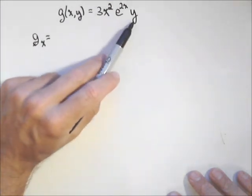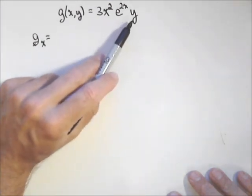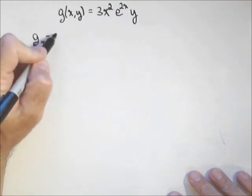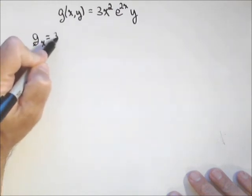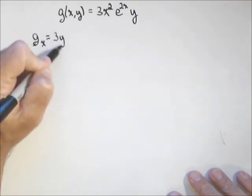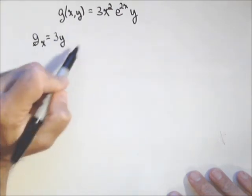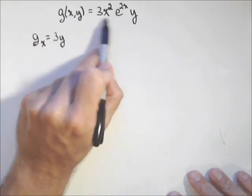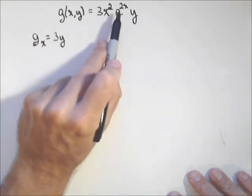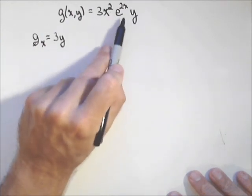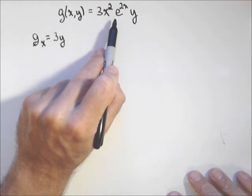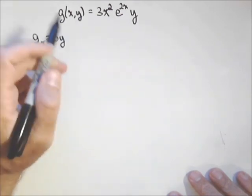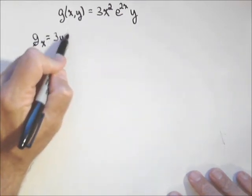So this becomes a constant — we treat it like a constant. Three is a constant, y is a constant, so three y will be in our derivative; we treat it like a constant. Here's the part we have to take the derivative of: x squared times e to the two x. Now that is a product, and it's going to require a product rule.